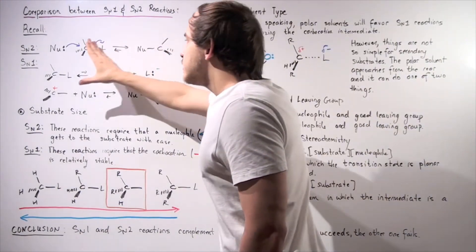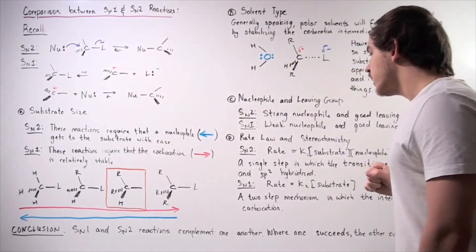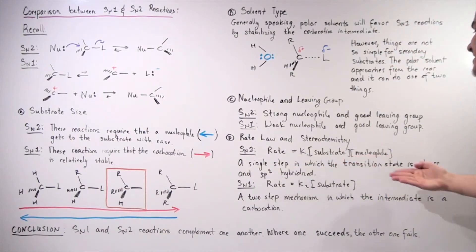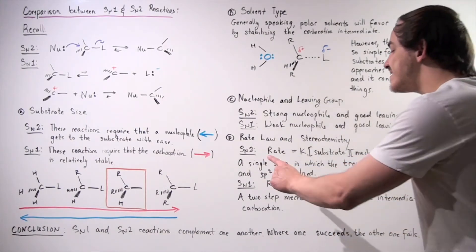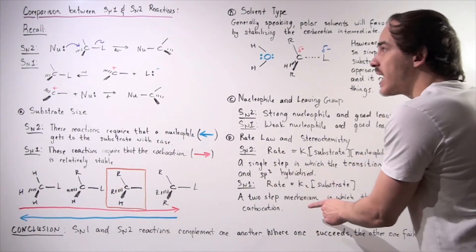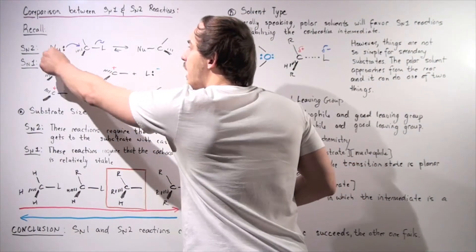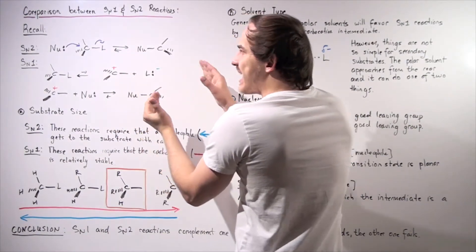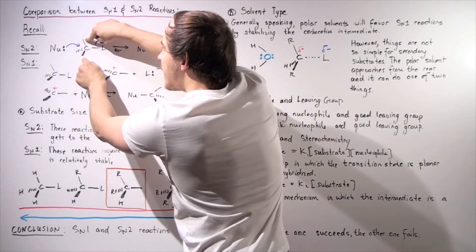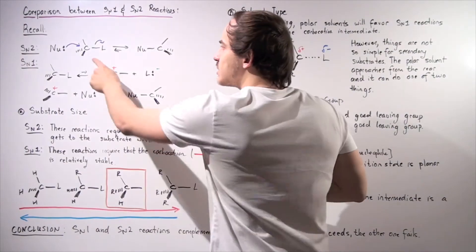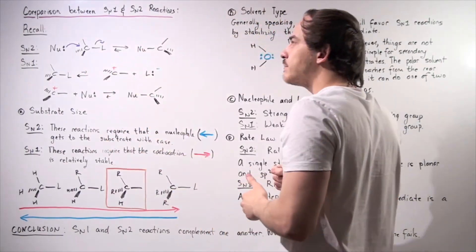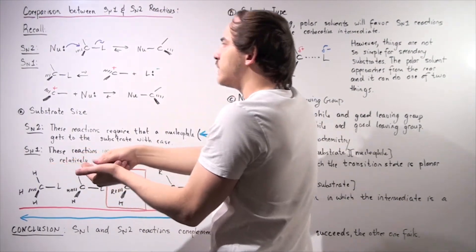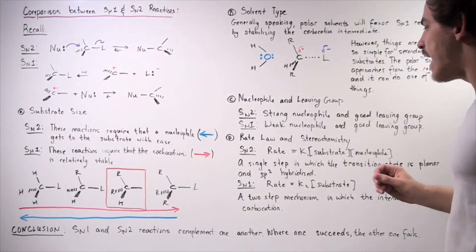In our SN2 reaction, the transition state is planar and SP2 hybridized. As the new bond forms and the old bond breaks, the three remaining bonds are SP2 hybridized and carbon is also SP2 hybridized. So these groups flip as an umbrella would flip in the wind.